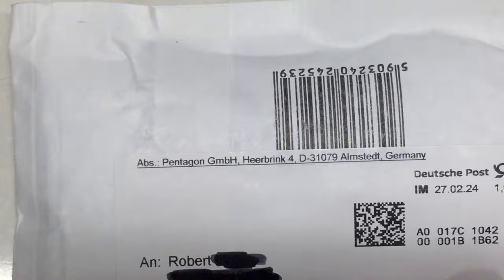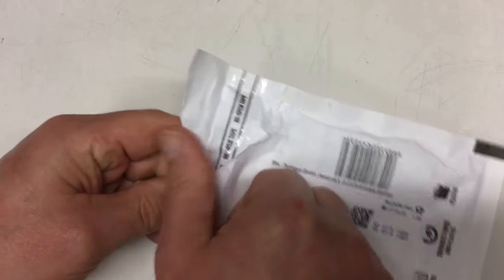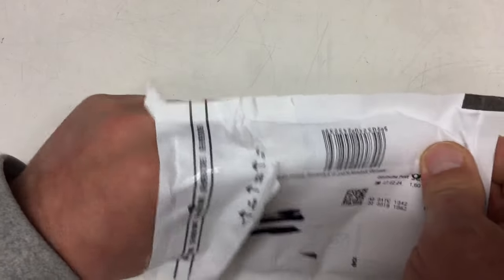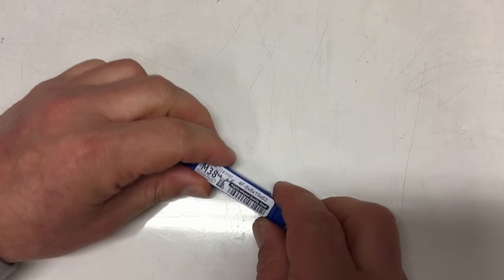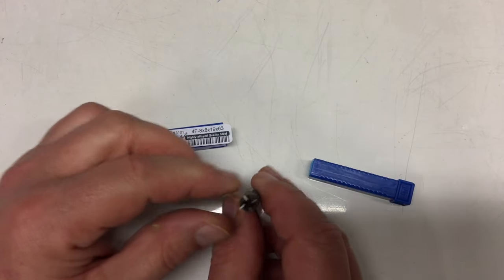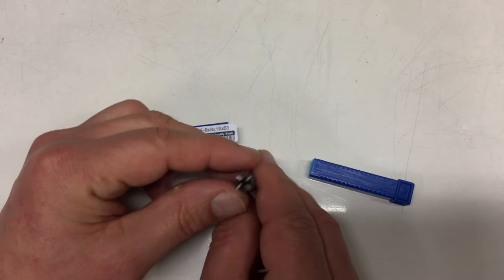We start with an innocent enough envelope from the Pentagon. Military secrets here, can't be much because it's one of the smaller envelopes. There's some paperwork in there but we leave that in the envelope, and what we have here is the odd tool.